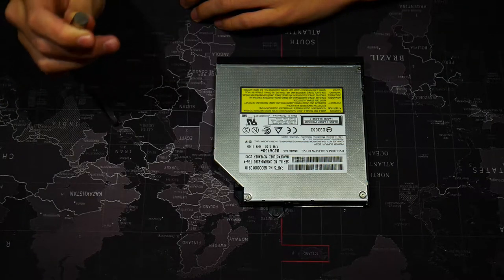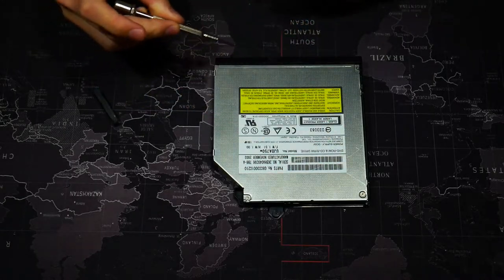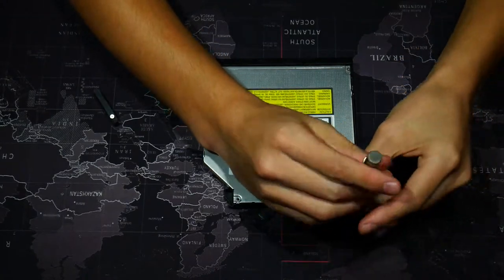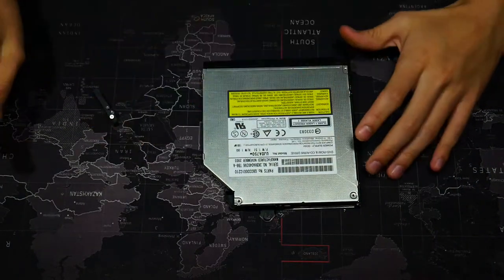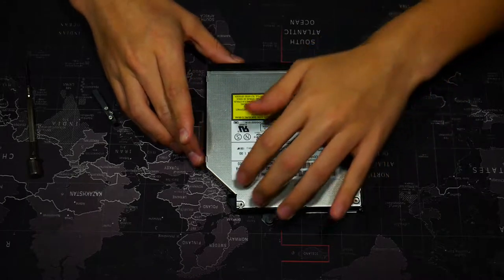The first thing we are going to do is unscrew these four screws right here. Those four screws are really small, so you can't see them. Once we have all the screws unscrewed, this should just come off.